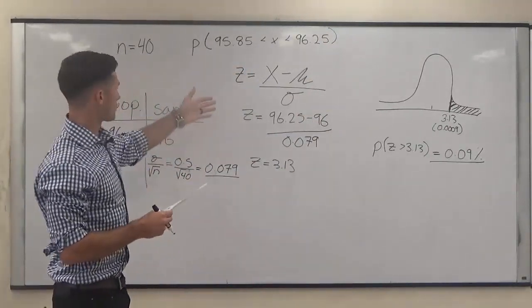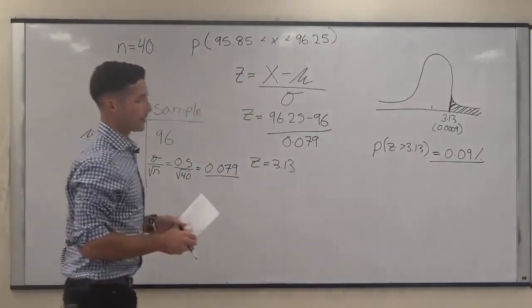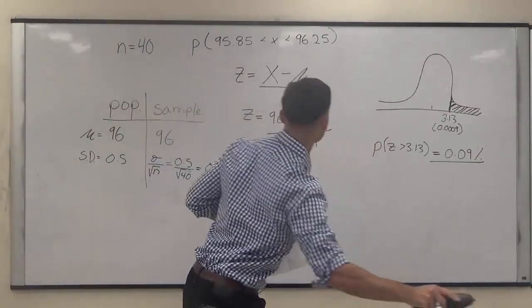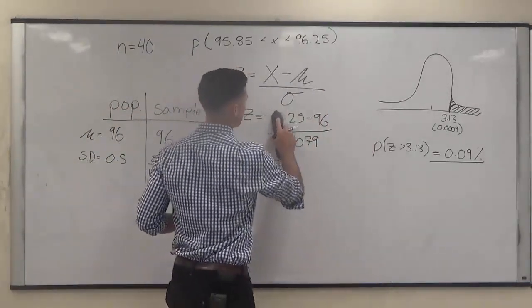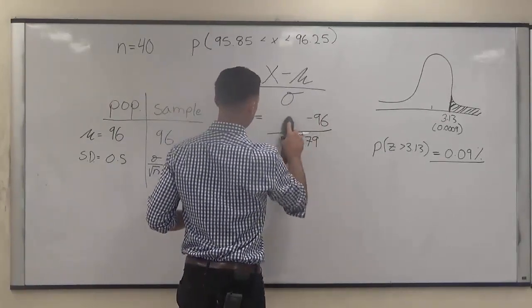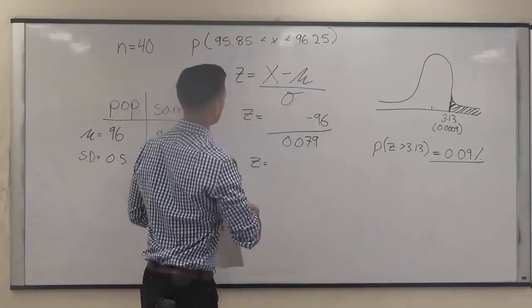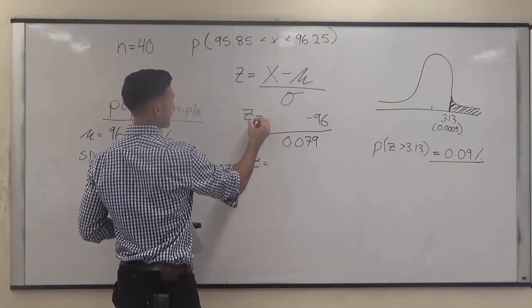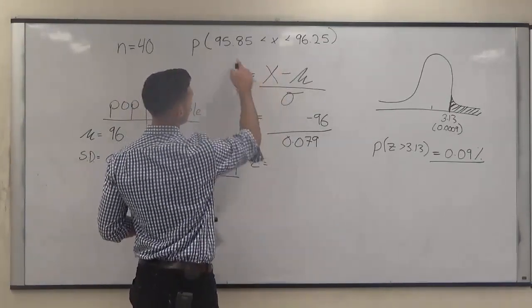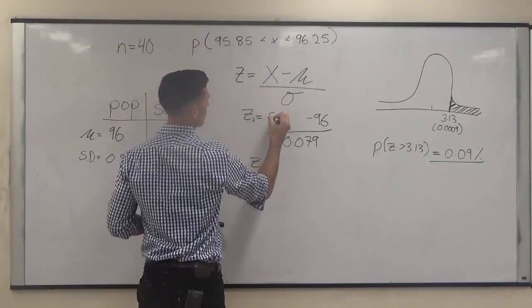So to do this, we can use our same formula as before. However, now we're going to find our second z-score. So to find this side, the second z-score, we're going to plug in the one we're looking for here,